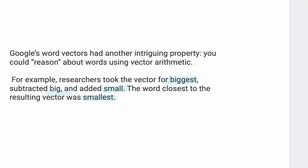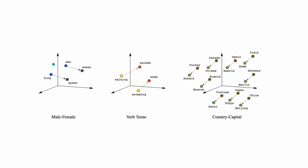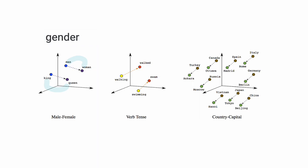For example, man is to woman as king is to queen — and this is a gender analogy. Then there are things like: walking is to walked as swimming is to swam — so again, it's a tense type of relationship. Let me highlight that — a tense type of analogy. These relationships were mapped within these vector spaces, and Google could do this arithmetic to draw these kinds of analogies.